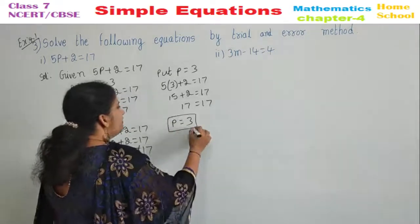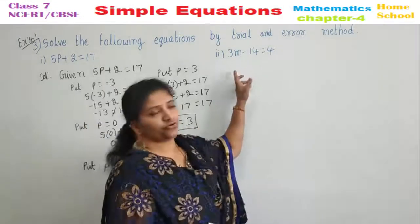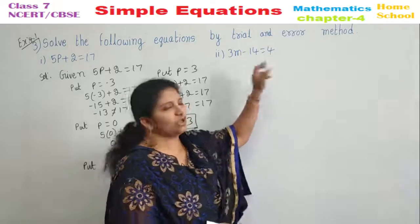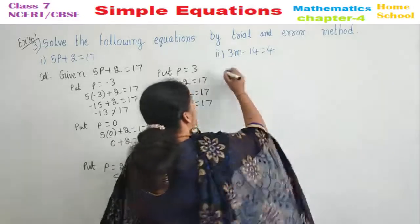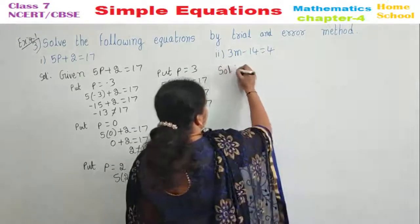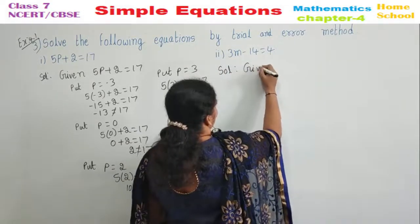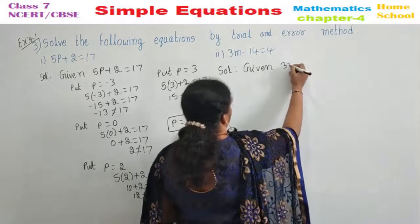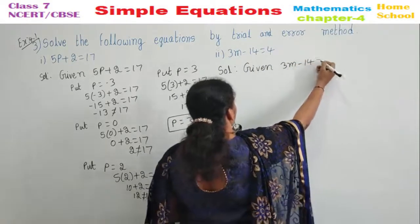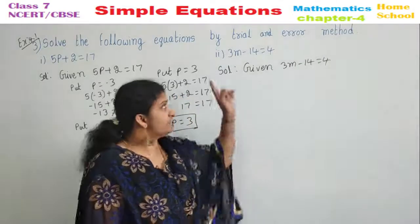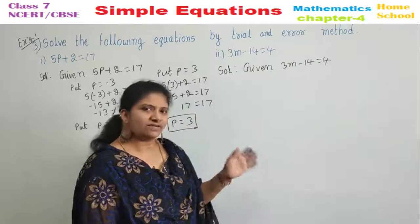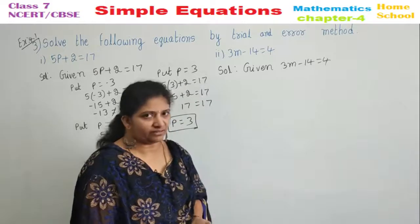Go to the next problem. Second problem. 3M minus 14 equal to 4. Observe the variable. What do you have? M. Start the solution. Given equation. 3M minus 14 equal to 4. We need to solve this by this method only. They have specified. Otherwise, you can go with any other methods.